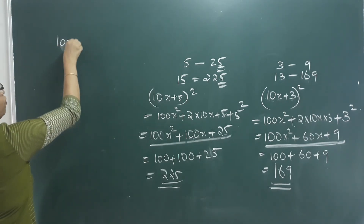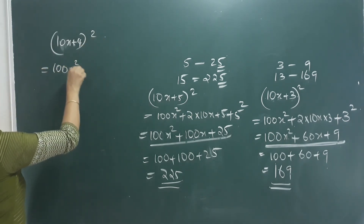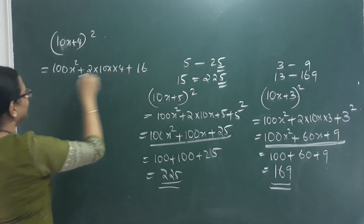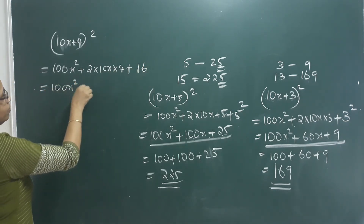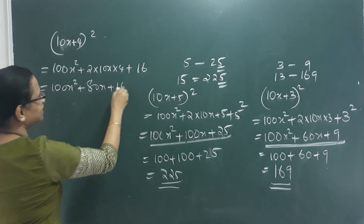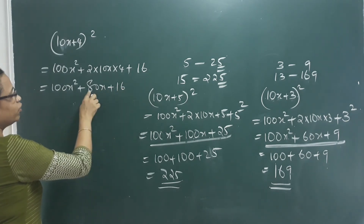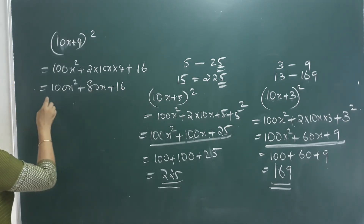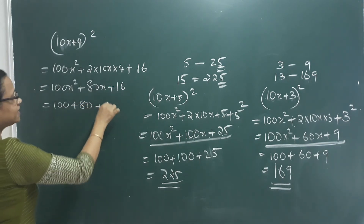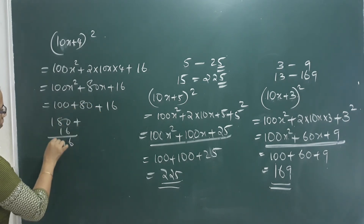Now for numbers ending in 4, we write it as 10x plus 4. Squaring: (10x+4)² using the formula gives 100x square plus 2 into 10x into 4 plus 4 square, which is 100x square plus 80x plus 16. Looking at the last digits: the 100x square and 80x terms contribute 0 to the last two digits, leaving 16. So numbers ending in 4 have squares ending in 6.